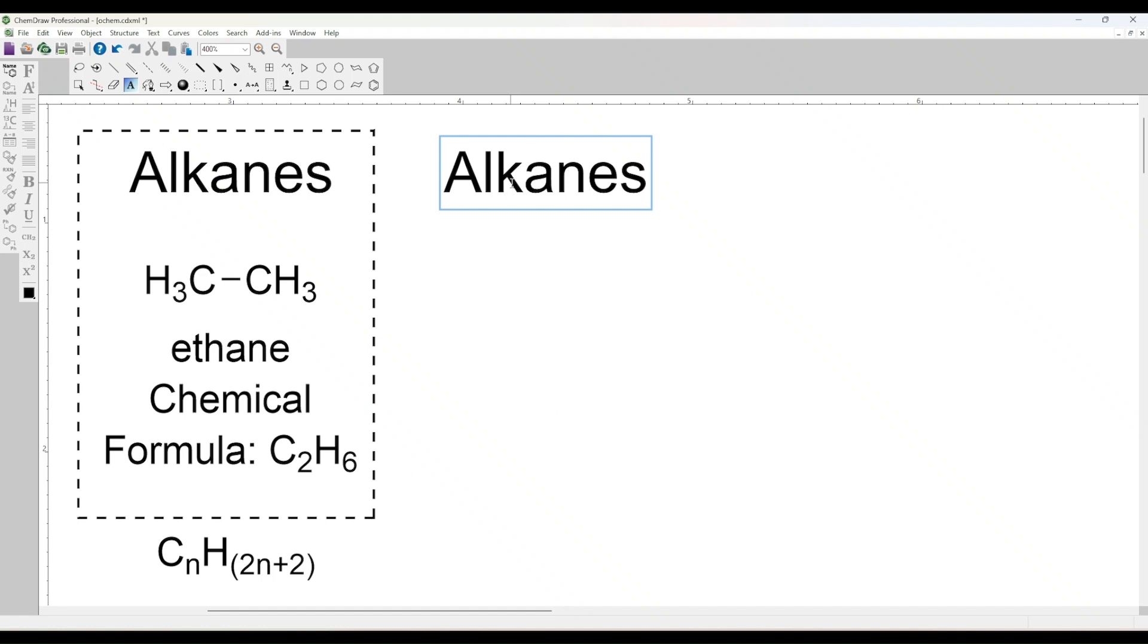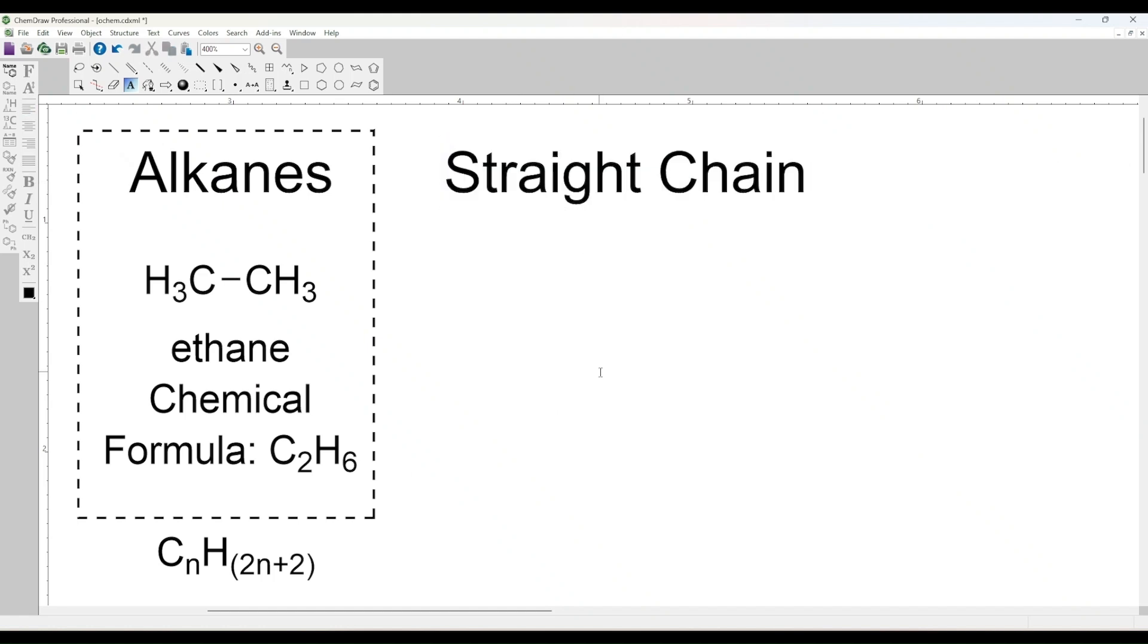Alkanes are further categorized as straight and branched chain. Straight chain consists of all carbon atoms connected in a single unbranched chain, such as butane.